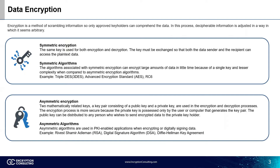Now we are going to talk about different types of encryption, the first being symmetric encryption. In this, the same key is used for both encryption and decryption. The key must be exchanged so that both the data sender and the recipient can access the plaintext data. It is often referred to as bulk encryption because of its speed when encrypting large amounts of plaintext data. Symmetric algorithms are the most commonly used and have the capability to encrypt large amounts of data in little time, because of a single key and lesser complexity when compared to asymmetric encryption algorithms.